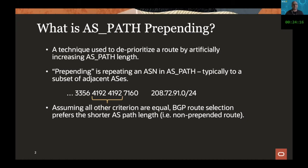Prepending refers to the repetition of an ASN in an AS Path, typically to a subset of adjacent ASes. In this example, AS 4192 is repeated — prepended one time, so it's one more than it would have been. Assuming all other criteria are equal, the BGP route selection process prefers the shortest AS Path length, so by prepending you are deprioritizing a route over any alternatives if they exist.